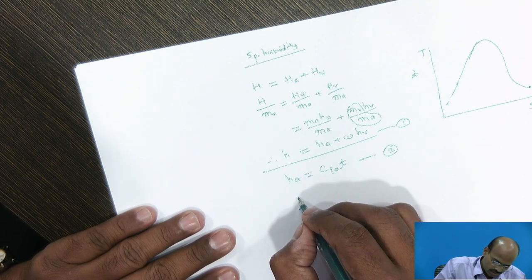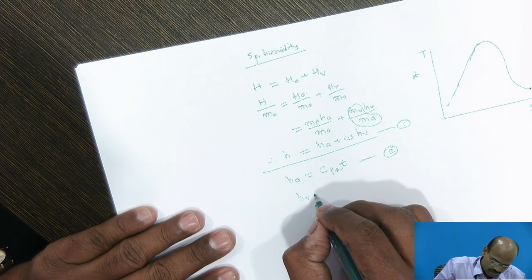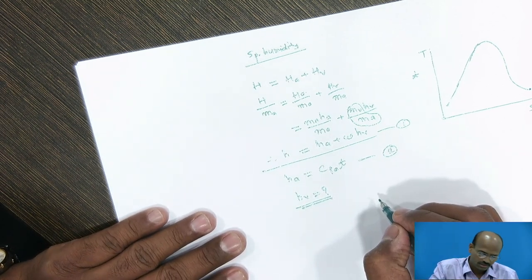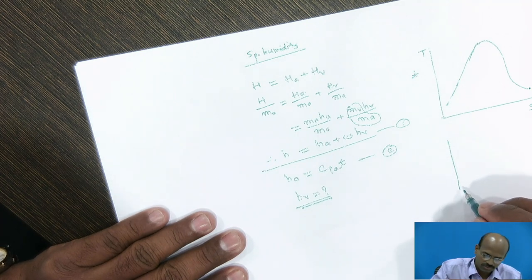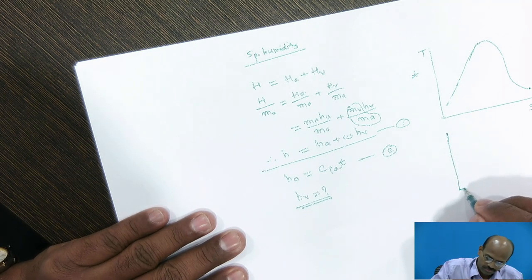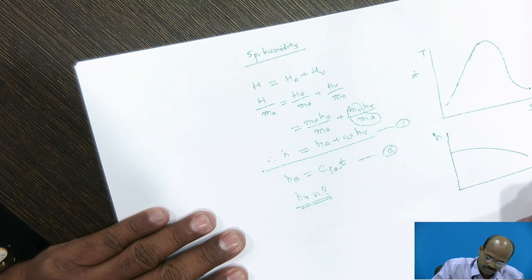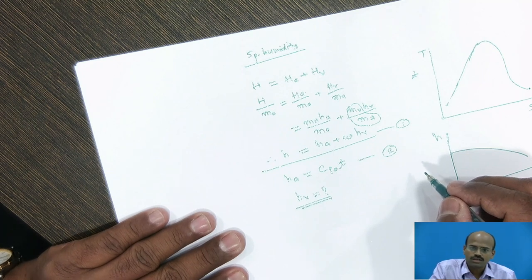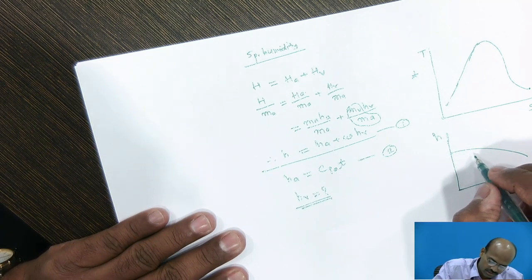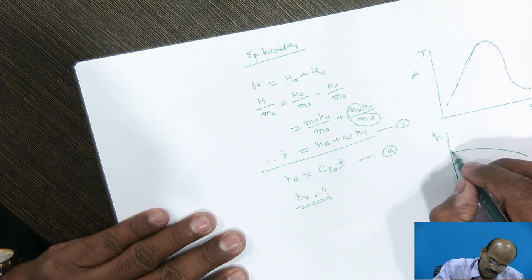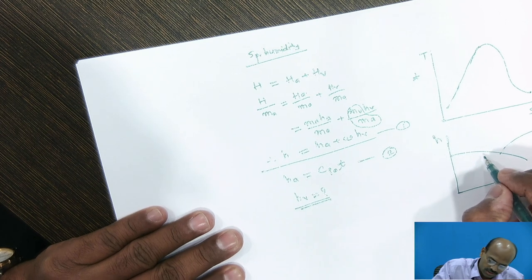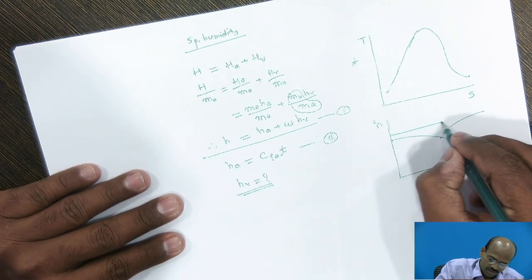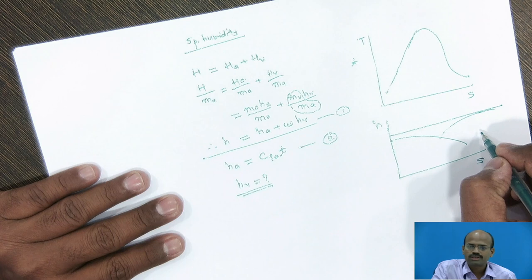Now, to find the enthalpy of vapor, we have to refer the Mollier chart. So, on the Mollier chart, if we refer the Mollier chart, it is found that up to 50 degree Celsius, the isenthalpic lines and isothermal lines are coinciding. So, if I draw here the isothermal line, then corresponding to isothermal, the isenthalpic lines are also coinciding on the same.